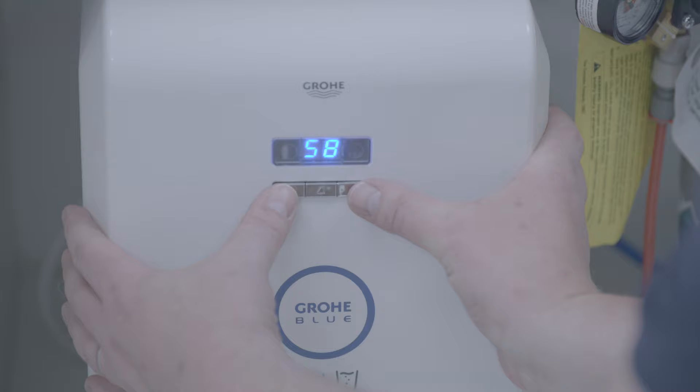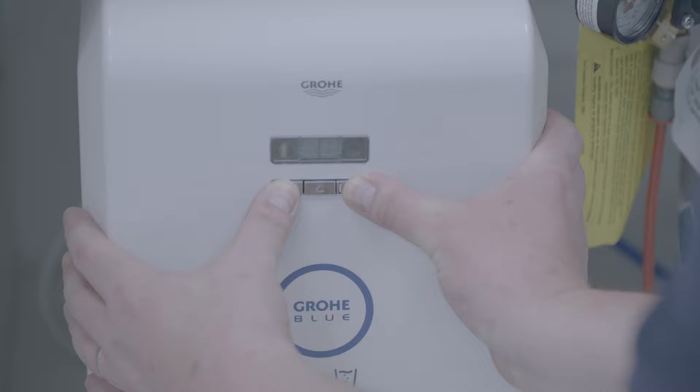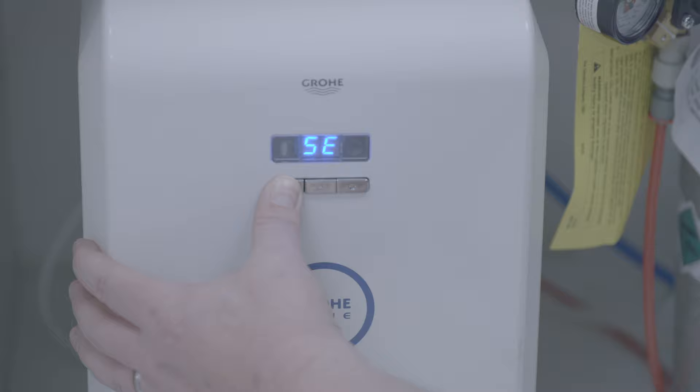So to do the handle calibration, press and hold the left and right button simultaneously. SE will pop up in the window and start to flash. Release, then press and hold the left button.